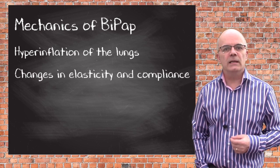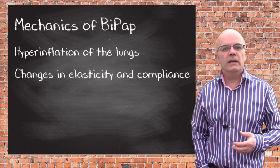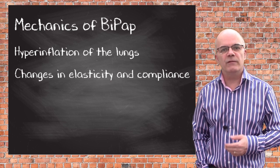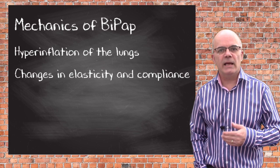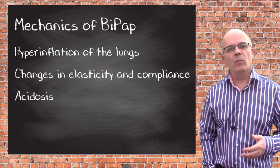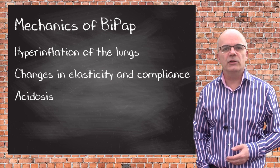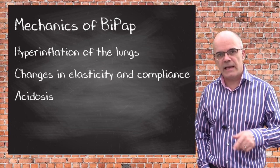Due to the changes in lung elasticity and compliance, they can quickly head towards ventilatory failure. This can then lead to an acidosis, which further compromises ventilatory muscle function. They are then in a downward spiral.